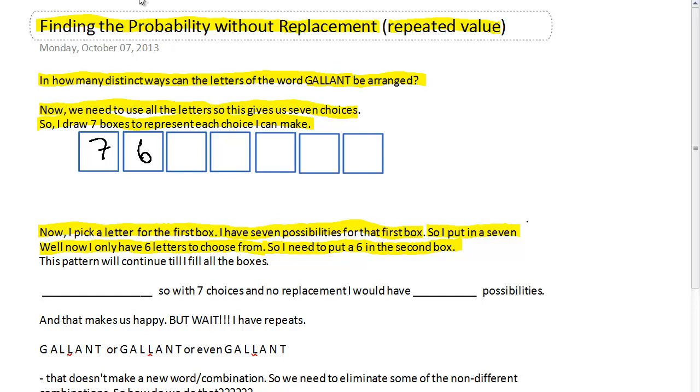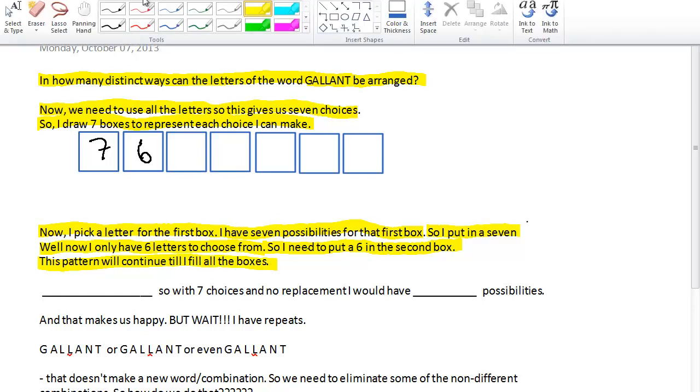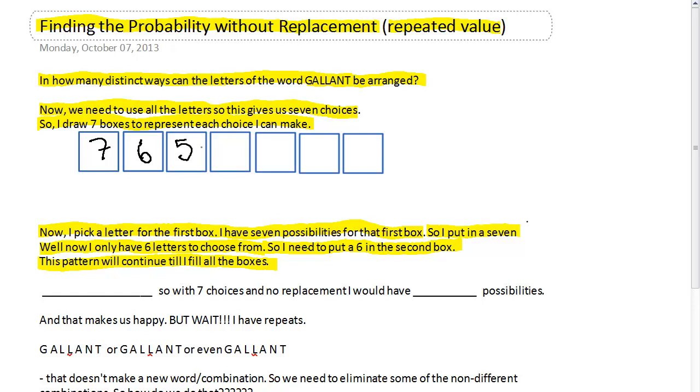So what I need to do is I need to put a six in the second box, because now I only have six choices for this second, six possibilities for this second choice. Well, as soon as I do that, then I only have five possibilities, and so then this pattern will continue until I fill all of the boxes. So now I only have five possibilities for the third choice, four possibilities for the fourth choice, three possibilities for the fifth choice, two possibilities for the sixth choice, and then there's one solitary letter left for this seventh choice. It's the leftover guy. And so what I want you to notice right here is, notice that because of the fundamental counting principle, this is seven times six times five times four times three times two times one, and so this is basically the seven factorial. So without replacement, basically what we end up with is a factorial.